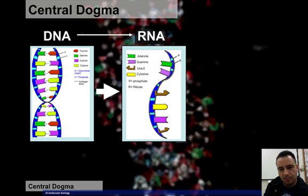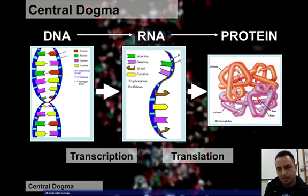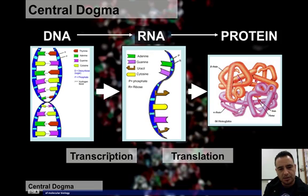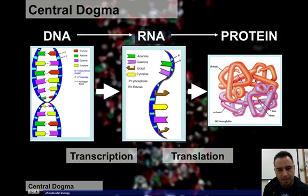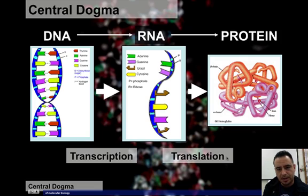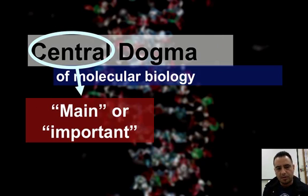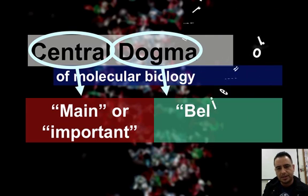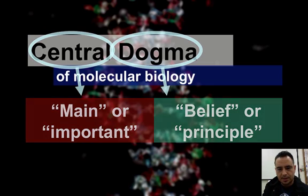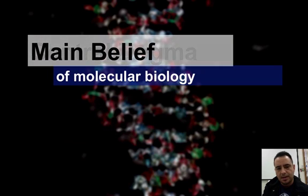Once we have RNA, then we're going to make protein. Remember, protein is made up of amino acids. DNA to RNA is transcription — it's not replication, because replication means you're copying all of DNA and making an exact copy. We're just making a single-stranded copy of one gene. And then RNA to protein is translation, because we're going to go from one language to another. The word central just means main or important, and dogma means belief or principle. This is the main belief of how organisms are built from DNA.